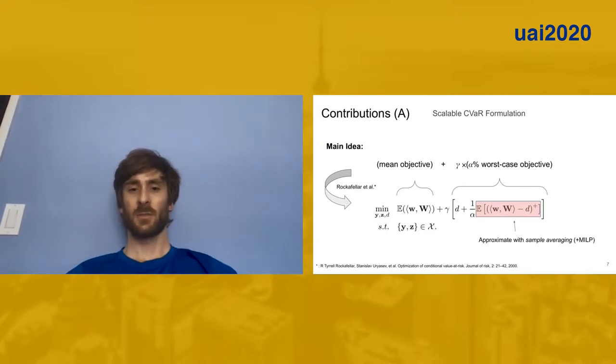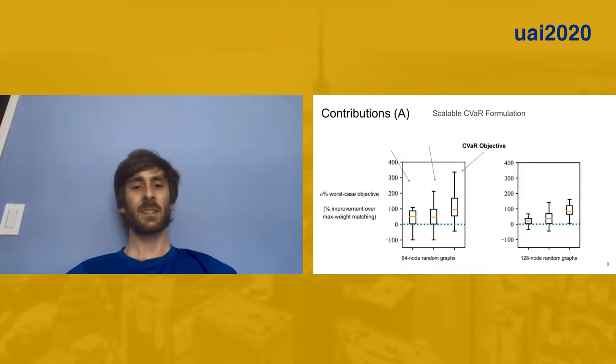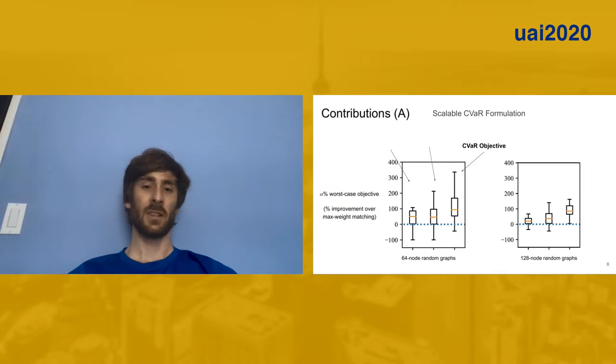Next, I want to show you some results from our approach. These set of results simply show that our formulation can actually optimize what we intended to. Here, I'm showing three different methods: first, a stochastic max expected weight method assuming identical edge failure probability, a stochastic objective assuming non-identical edge failure probability, and then our CVaR objective. The horizontal axis here shows the percent improvement for the CVaR objective over a deterministic or max weight matching. This is for two different sets of random graphs. We can see that there's a clear and fairly strong improvement of using our CVaR approach over these stochastic approaches.